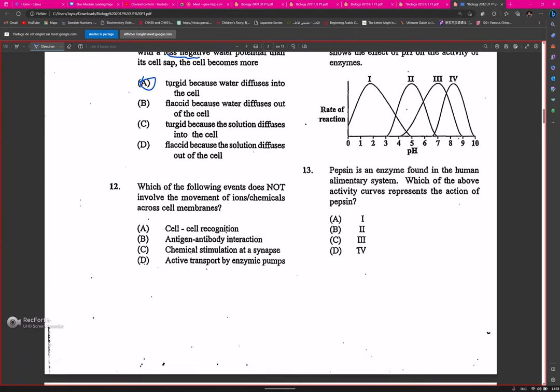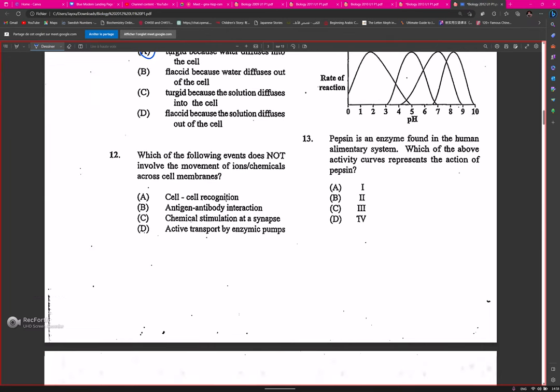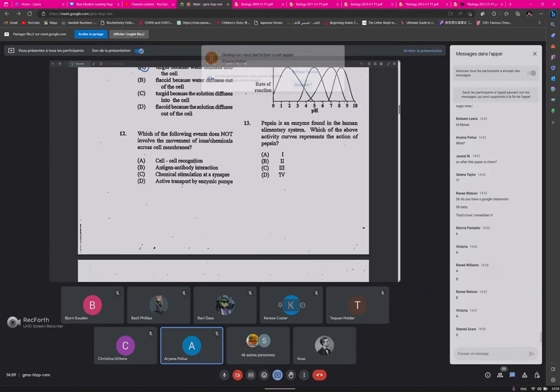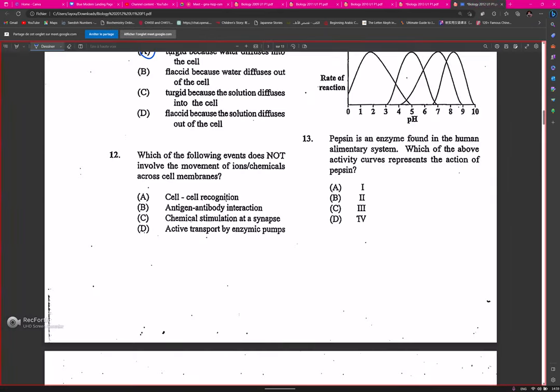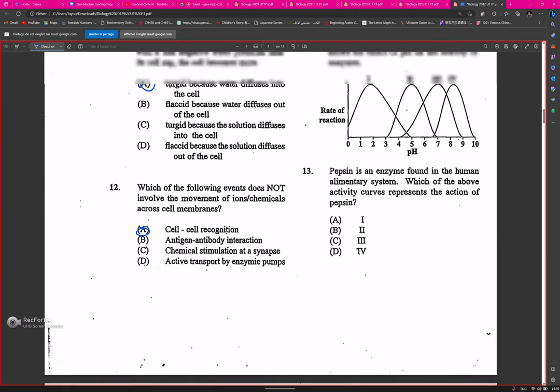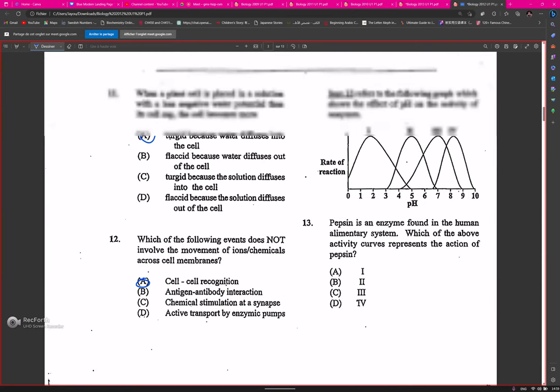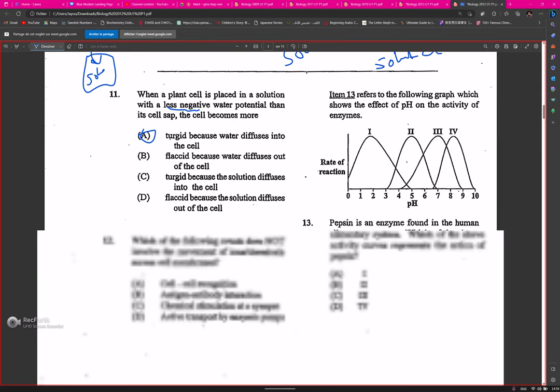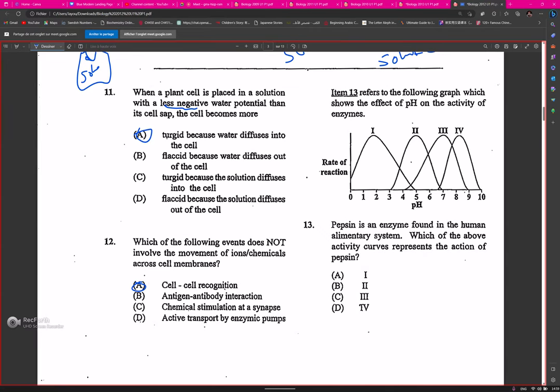Question twelve: which of the following events does not involve the movement of ions across cell membranes? This repeated. The answer is A, cell recognition. Then we have pepsin found in the stomach, which would have a low pH. Therefore, what best represents pepsin? Graph one, wonderful.